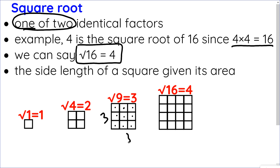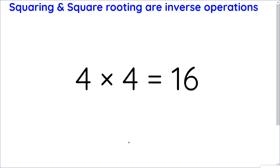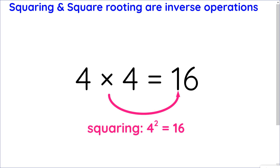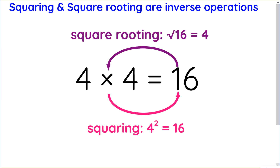Let's talk about how squares and square roots are related. They're actually inverse operations to one another. Starting with the fact that 4 times 4 is 16 — going in one direction, 4 squared is 16, that's squaring 4. If I want to go backwards, which is what an inverse operation is, the square root of 16 is 4 — that would be square rooting. So they are inverse operations to one another.